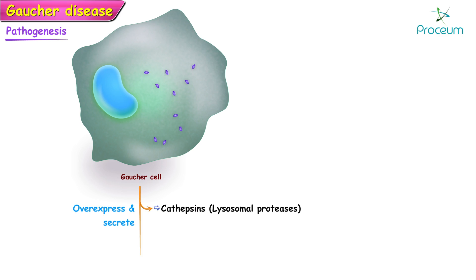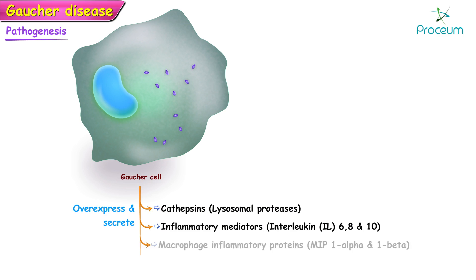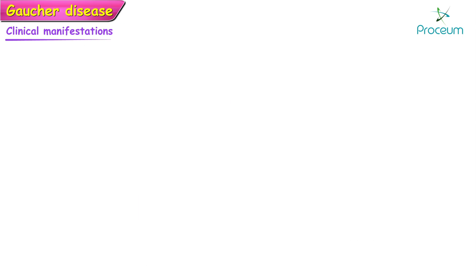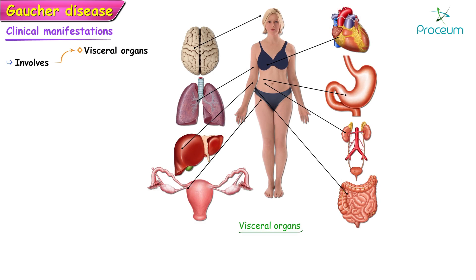The Gaucher cells and neighboring macrophages overexpress and secrete lysosomal proteases such as cathepsins, and inflammatory mediators such as interleukin-6, interleukin-8, and interleukin-10, along with macrophage inflammatory proteins MIP-1-alpha and MIP-1-beta. Certain chemotactic factors such as CXC motif chemokine ligands 2, 9, 10, and 11 are also produced in this disease.